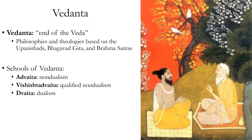Vedanta is based on the Upanishads, the fourth and last part of Vedic scriptures, and these have more philosophical teachings about karma, samsara or the cycle of rebirth, and salvation or moksha. In addition to the Upanishads, other texts considered Vedanta include the Bhagavad Gita — the chapter of the epic Mahabharata in which the god Krishna gives teachings on how to attain moksha — and a later text called the Brahma Sutras, which contains a more systematic summary of the teachings of the Upanishads.